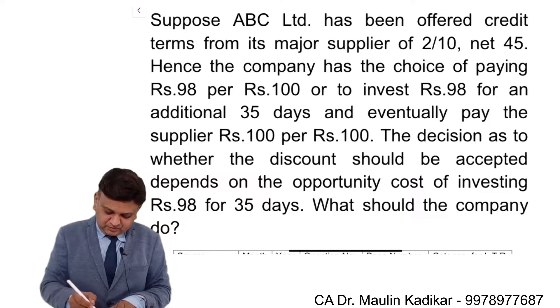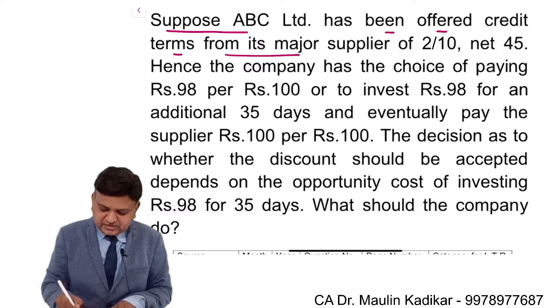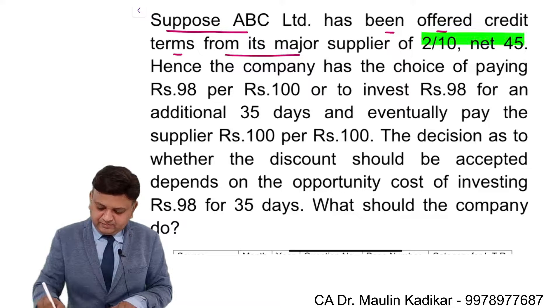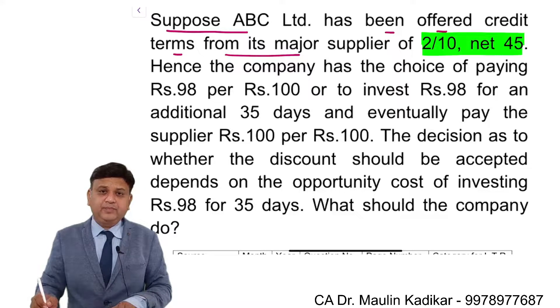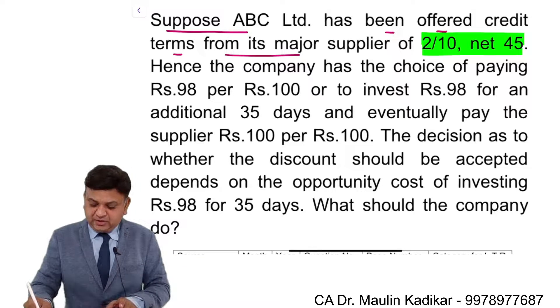Next question. Suppose ABC Limited has been offered credit terms from its major supplier 2 by 10 net 45.